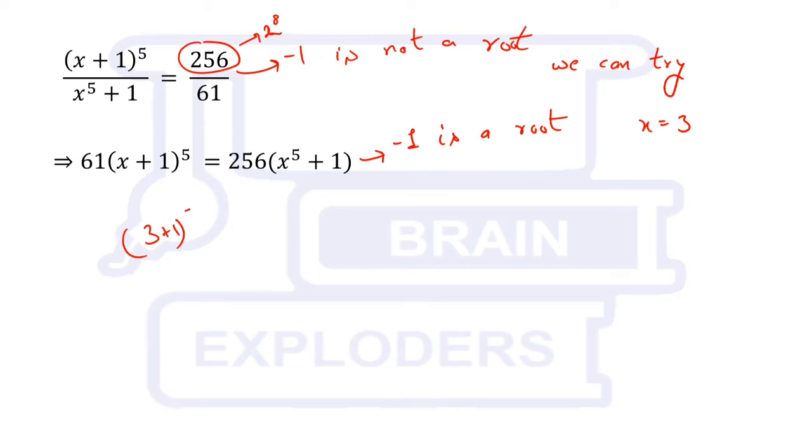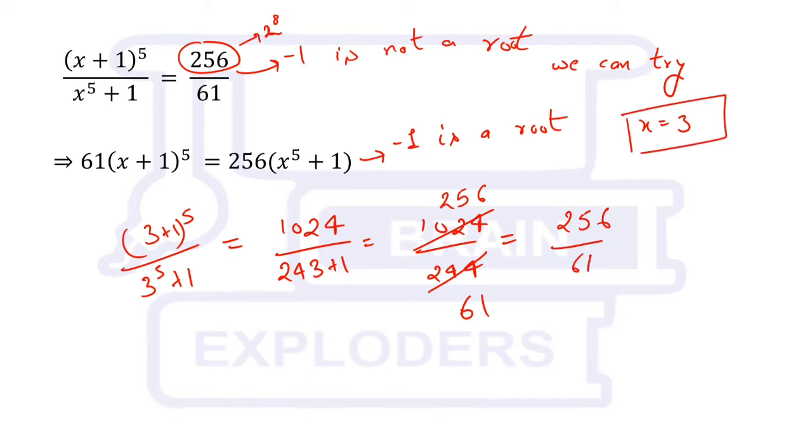(3 + 1)^5 / (3^5 + 1). This is equal to 4^5, which is 1024, upon 3^5, which is 243, plus 1, equals 1024 over 244. Dividing it by 4, we get 256 and here we get 61. It implies that x = 3 is a root of this equation, and as per our result, it means that x = 1/3 is also a root of the equation. Nice.